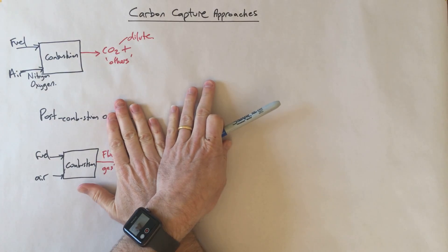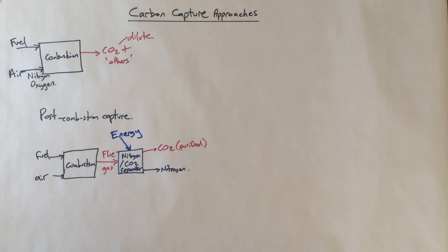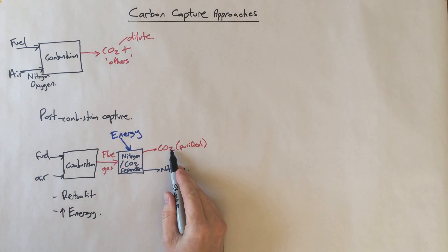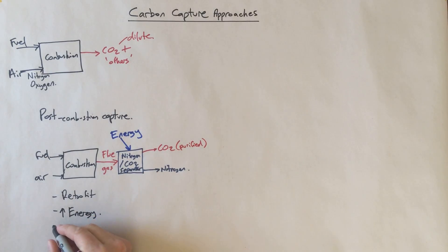This is post-combustion capture, the most obvious thing. We take the plant that we had originally and we can effectively bolt on a purification plant. It's got some upsides in that it's good for retrofitting. So you've got an existing power station or an existing plant that produces CO2 in its flue gas - you can retrofit existing plants with that. It does require a lot of energy. The reason is that this flue gas is predominantly nitrogen, and you're having to process a very large amount of flue gas, most of which is not the CO2 you're actually interested in. And thirdly, it's quite capital intensive.